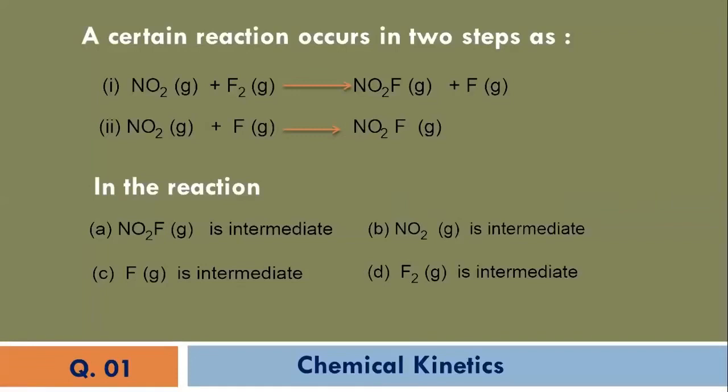A certain reaction occurs in two steps. First, NO2 gas plus F2 gas gives NO2F gas plus F gas. In the second step, NO2 gas plus F gas reacts to combine to form NO2F gas. In the reaction, four options are given: NO2F gas is intermediate, NO2 gas is intermediate, F gas is intermediate, or F2 gas is intermediate. The correct option of this MCQ is C, that is F gas is an intermediate.